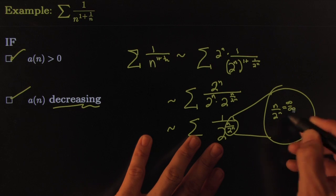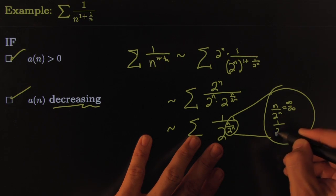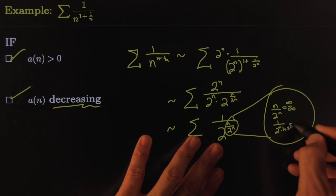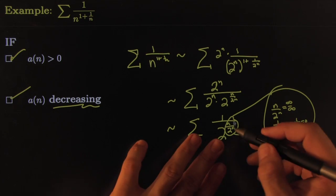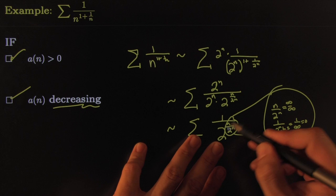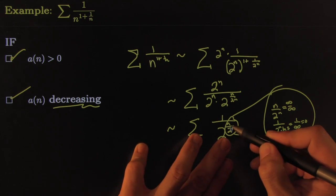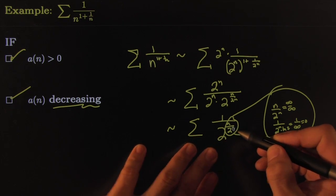On this one, n over 2 to the n, if you apply the limit as n goes towards infinity, this will give you infinity over infinity. You could apply L'Hopital's, so this would be 1 over 2 to the n times ln of 2. Plug-in method will give you 1 over infinity, which is equal to 0.